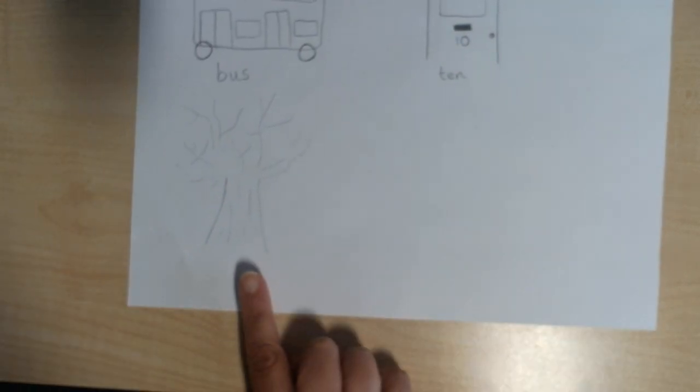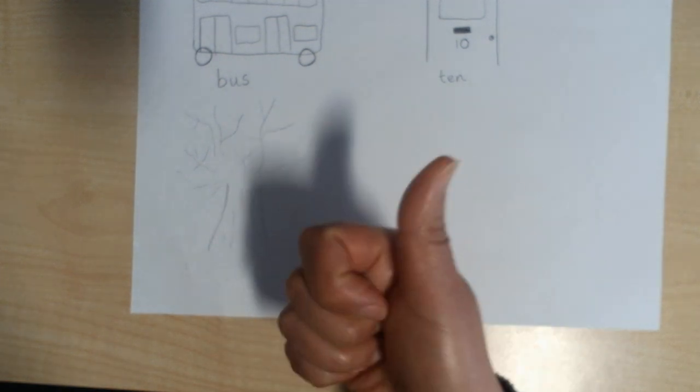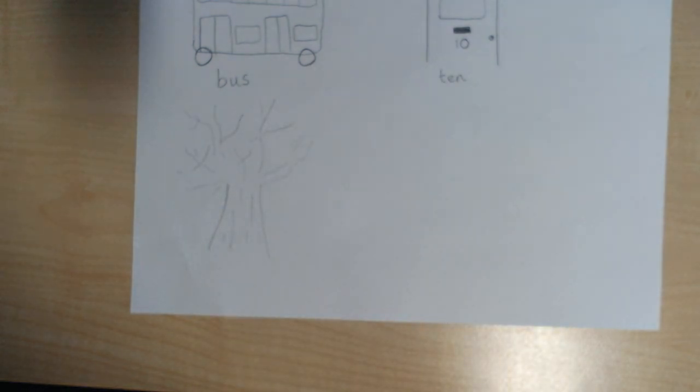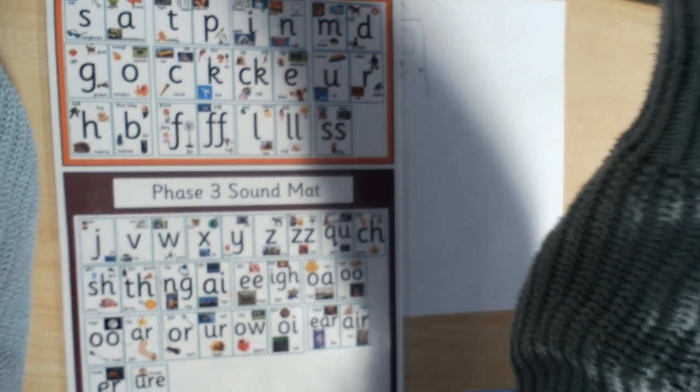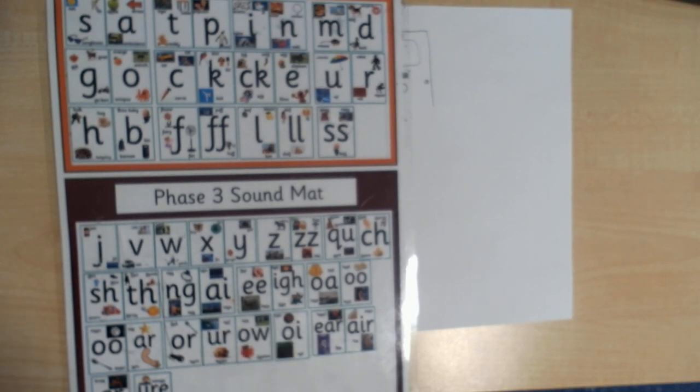I could also see a tree. Let's have a go at sounding out the word tree: t-r-ee, tree. Now you might like to use our sound mat to help us with this one because it's got a sound which we haven't learnt yet.